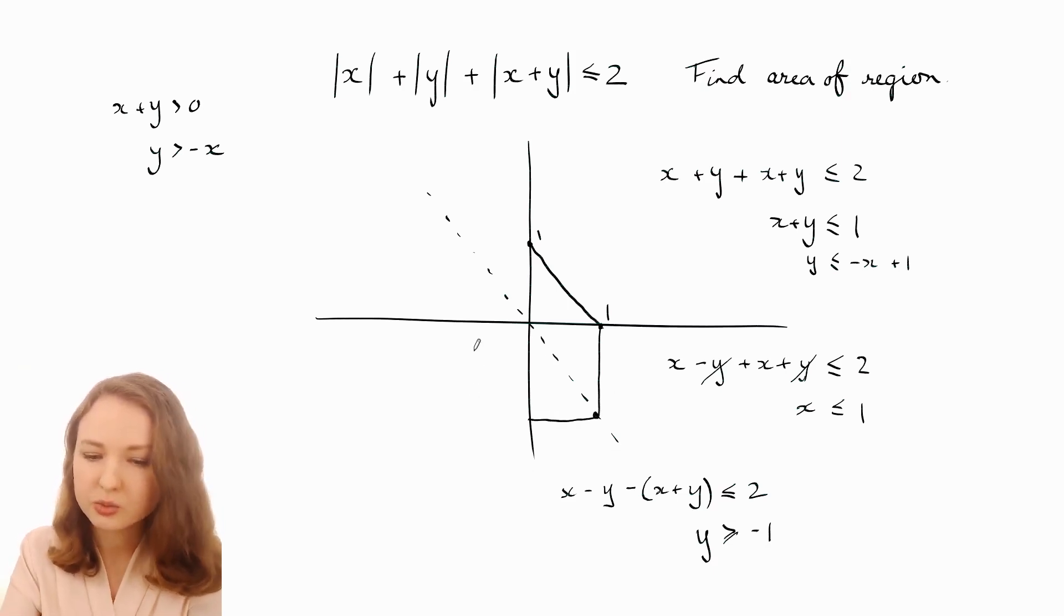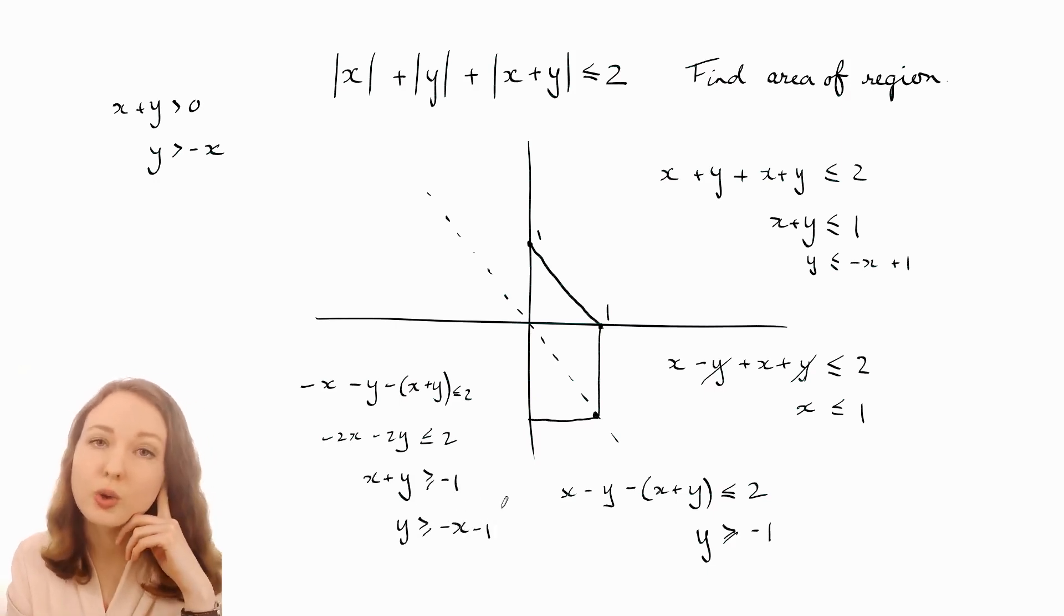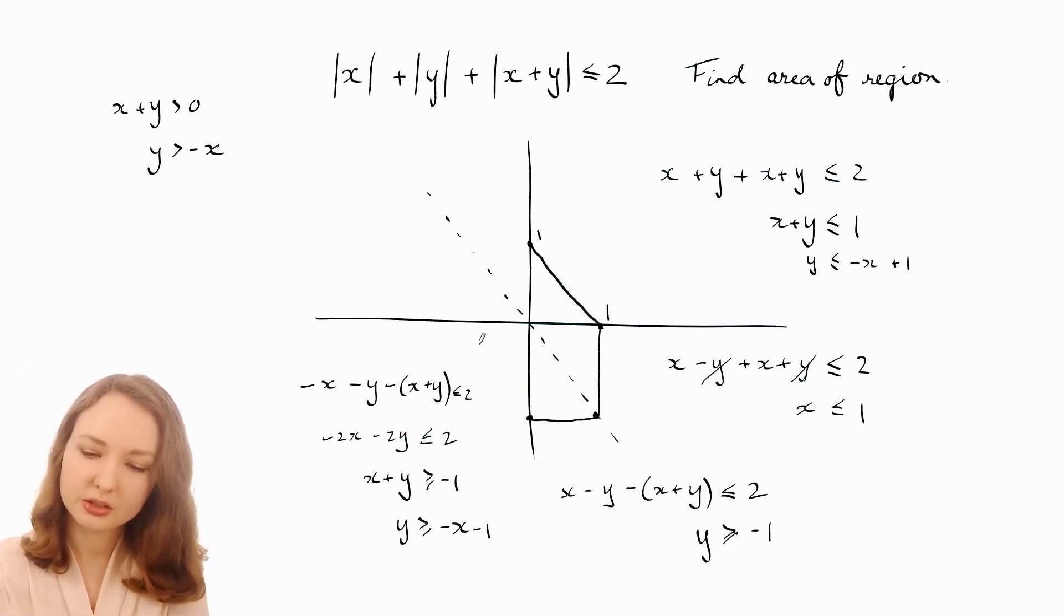Okay, and then over here x and y are both negative, and so is x+y, so that makes things easier. We've got -x - y - (x+y), that's less than or equal to 2. And let's simplify this, so we've got -2x - 2y, and then let's divide both sides by the -2. So again that's going to flip the inequality, and then if you like you can rearrange this so it's -x - 1. So that's a line with a slope of -1 and y-intercept of -1. So y-intercept of -1 and it's going like that. That point is at -1 and that's at -1 as well.